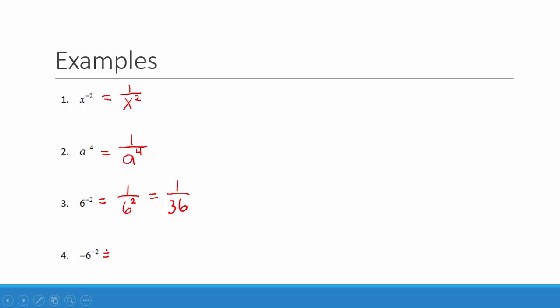In our next example, the negative is not being affected by the power on the 6. The negative is carried through the problem in front of our answer. So we have negative 1 over 6 squared. 1 over 6 squared is 36, and we bring the negative in front. Our answer is negative 1 over 36.